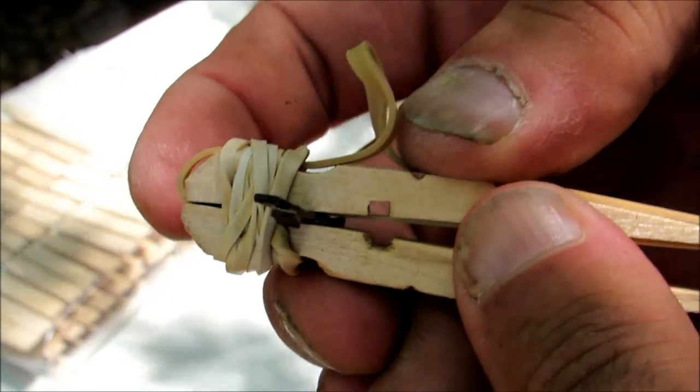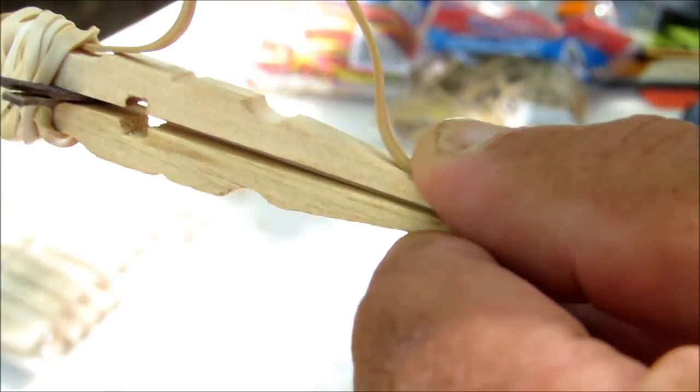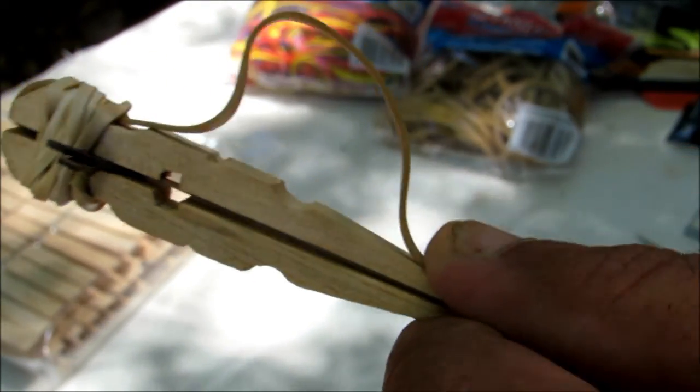Put your other two matches in the other end, squeeze it together, and then wrap your rubber band around it.